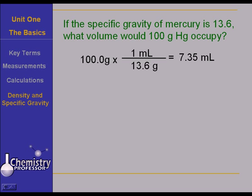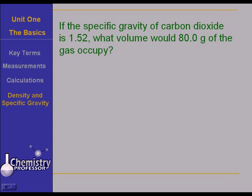But let's try a problem that's a shade more interesting. If the specific gravity of carbon dioxide is 1.52, what volume would 80 grams of the gas occupy? The specific gravity is 1.52. What is our reference? What is our standard for gases? Well, the standard for gases is air at STP. And since we weren't given any other conditions, we will therefore assume that this is at STP. And the specific gravity, I beg your pardon, the density of air is 1.292 grams per liter.